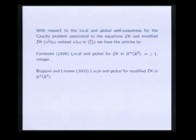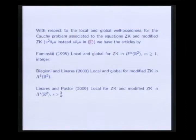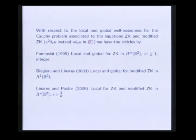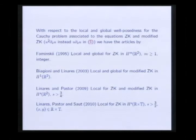In 2009, Linares and Pastor proved local well-posedness for the ZK and for the modified ZK in Sobolev spaces H^s with s real greater than 3/4. More recently, Linares, Pastor, and Saut proved local well-posedness for the Cauchy problem in a cylinder. In other words, with the equation periodic in the variable Y. They proved this local well-posedness in H^s for s greater than 3/2.